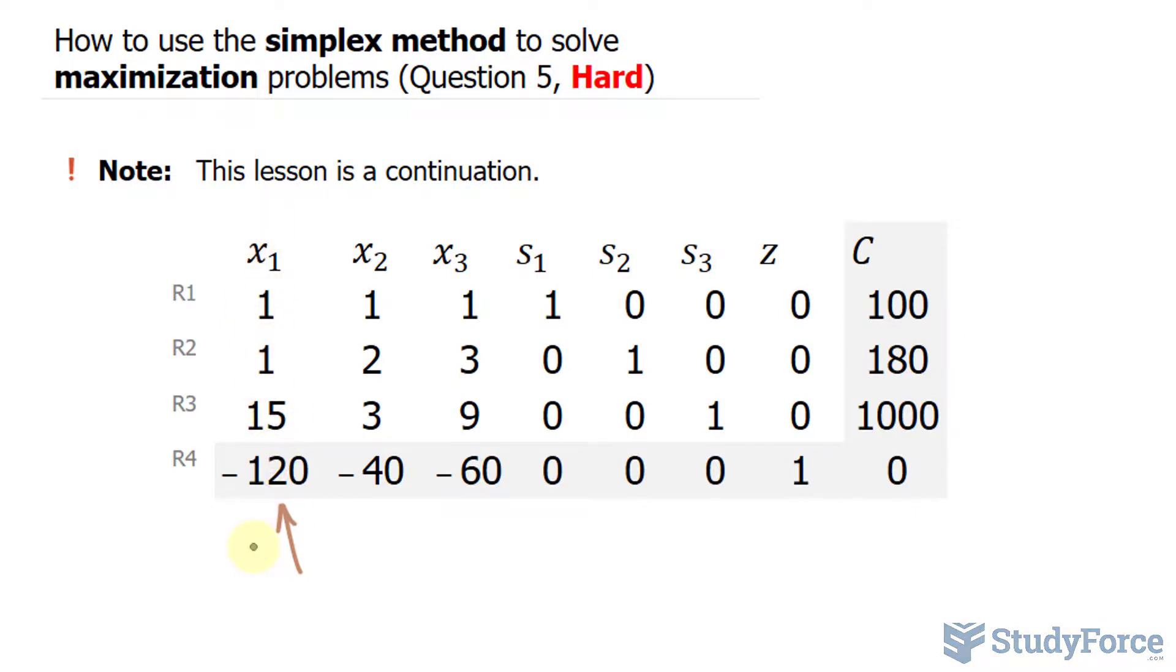Because using the pivot column, we'll take the constants and divide it by each of these numbers. 100 divided by 1 is 100, 180 divided by 1 is 180, and 1000 divided by 15 should give you 66 and 2 thirds. Of these three numbers, the smallest is 66 and 2 thirds.